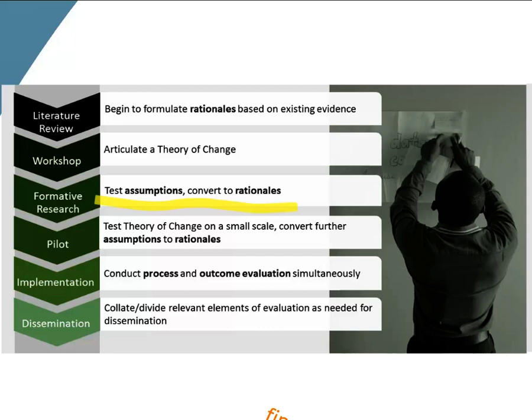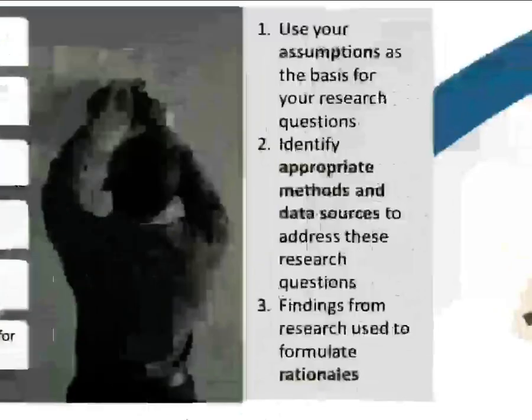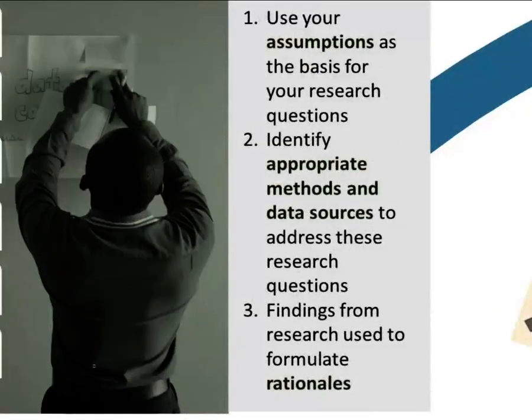All the things we weren't sure about in our theory of change — how our programme would actually work — we need to test those so that they become evidence, become rationales, which means that we think our programme is much more likely to work in real life. That process involves using the assumptions from your theory of change and turning them into research questions for the formative research phase. Then you identify appropriate methods and data sources to address the research questions, and you use the answers to formulate rationales and to modify your theory of change.